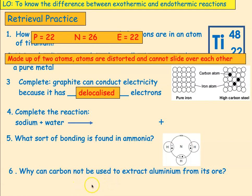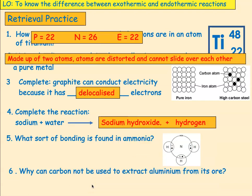Complete the reaction: sodium plus water. That's when we used to put sodium into water and we got a very violent reaction. We get sodium hydroxide — which is why it's called an alkali metal — and we get hydrogen, which is what all the fizzing is.